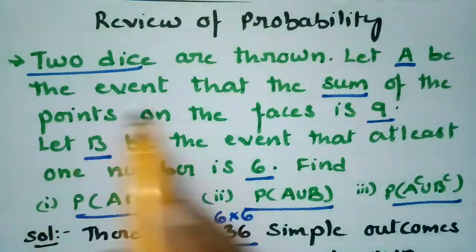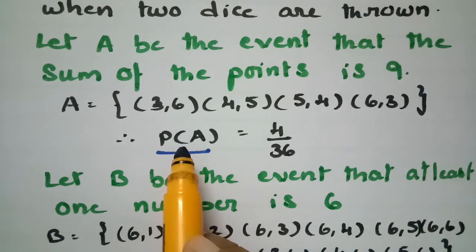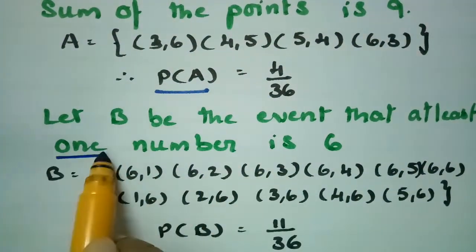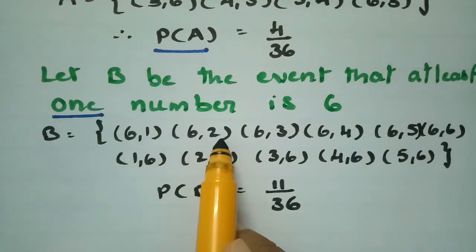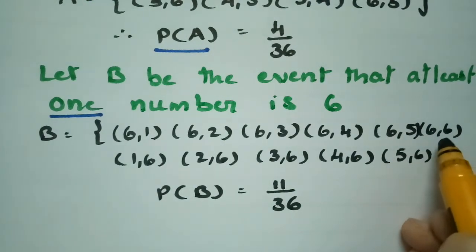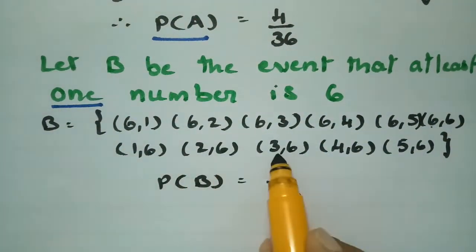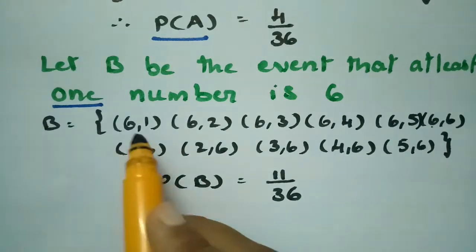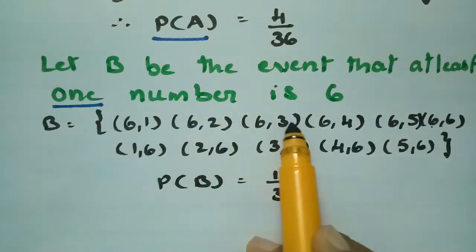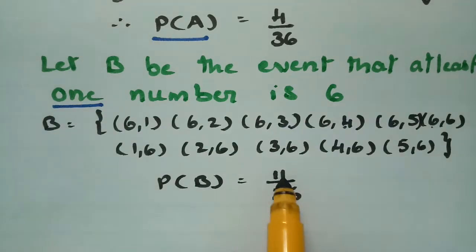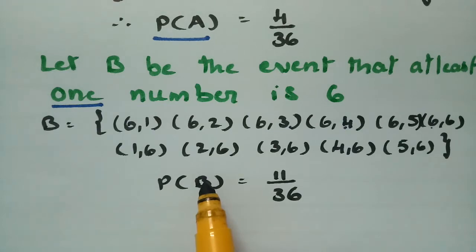Therefore probability of A is 4 by 36. Now let B be the event that at least one number is 6. The outcomes are: (6,1), (6,2), (6,3), (6,4), (6,5), (6,6), (1,6), (2,6), (3,6), (4,6), (5,6) — that is 11 chances. So the probability of B is 11 by 36.